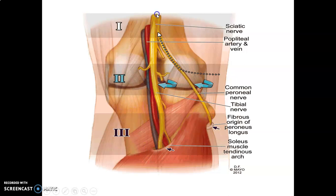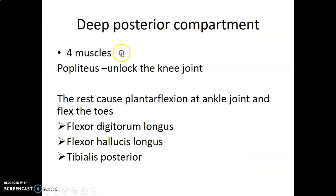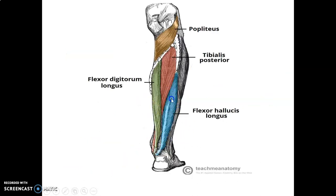The deep part of the posterior compartment has four muscles. First, the popliteus, which unlocks the knee — by lateral rotation of the femur on the tibial condyles from a fully extended position — to allow knee flexion. The remaining three muscles cause plantar flexion at the ankle and also flex the toes: flexor digitorum longus (flexes the digits), flexor hallucis longus (flexes the big toe), and tibialis posterior. These tendons all pass medially through the tarsal tunnel, which corresponds to the carpal tunnel in the wrist.